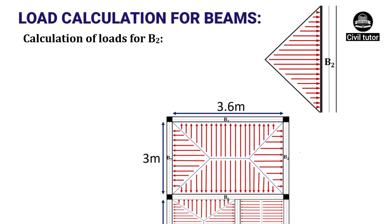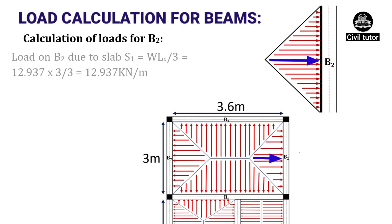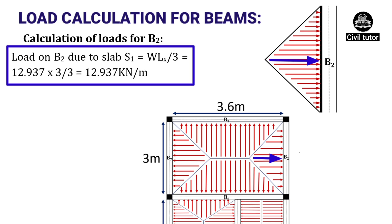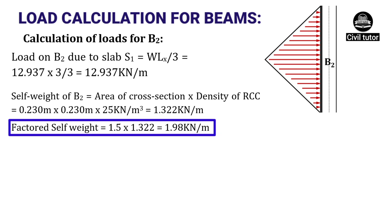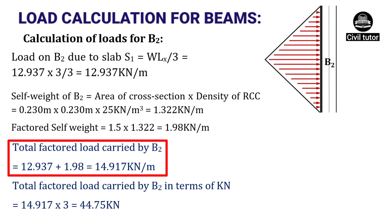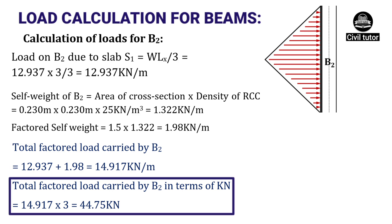For beam B2, it carries the right triangular portion of slab S1, given by W·Lx/3, where W = 12.937 kN/m² and Lx = 3 m. Substituting, the load on B2 due to S1 = 12.937 kN/m. The self weight of B2 = 1.322 kN/m and factored self weight = 1.98 kN/m. Total factored load on B2 = 12.937 + 1.98 = 14.917 kN/m. In kN: 14.917 × 3 m = 44.75 kN.